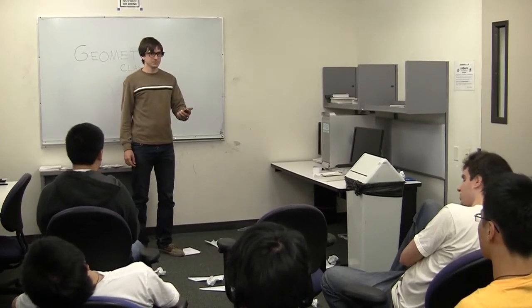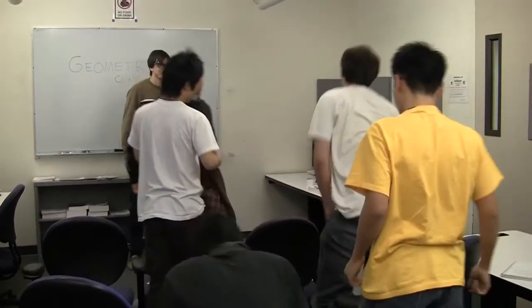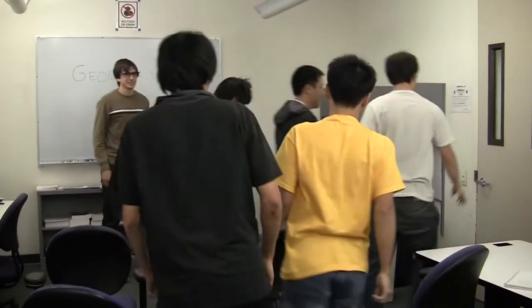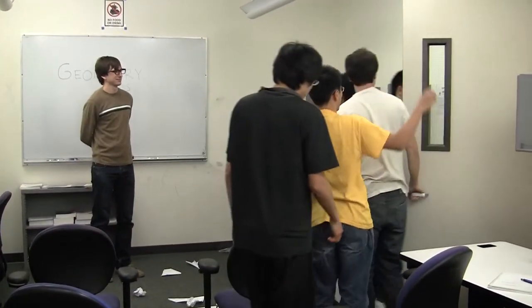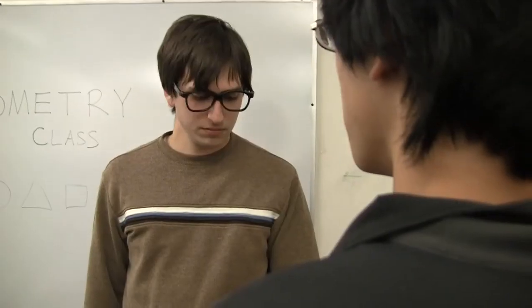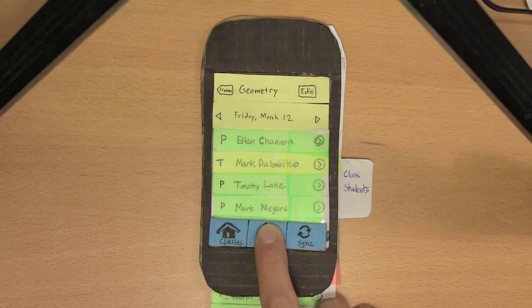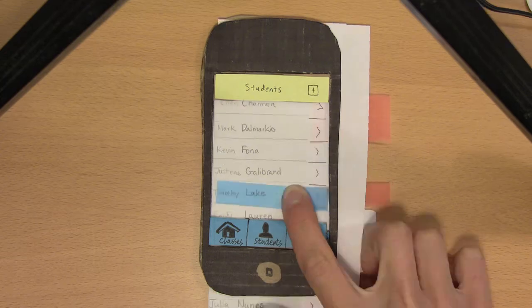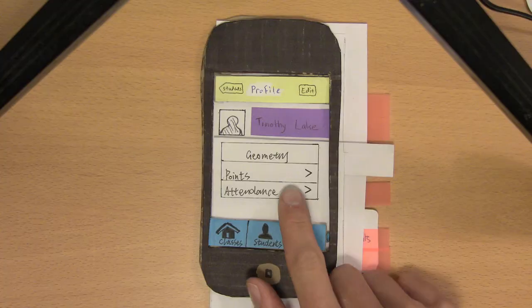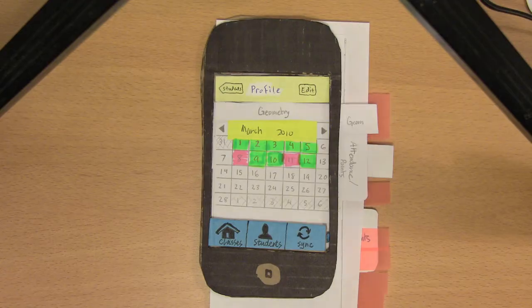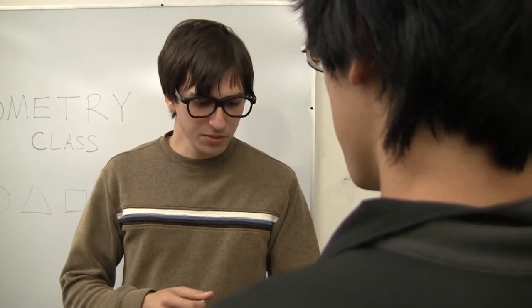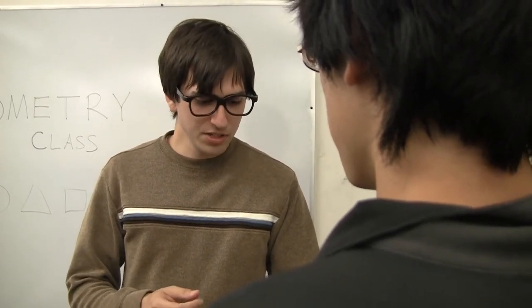Class dismissed. Mr. Dugan, you marked me absent the other day, but I was here. Oh, sorry Timothy — let me check your records. In the students tab, Mr. Dugan has access to a full student history. Oh, it looks like you were here.